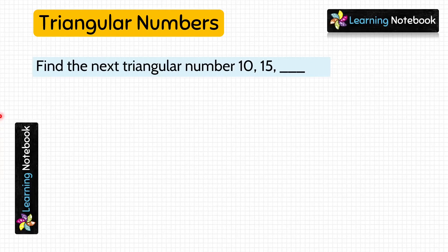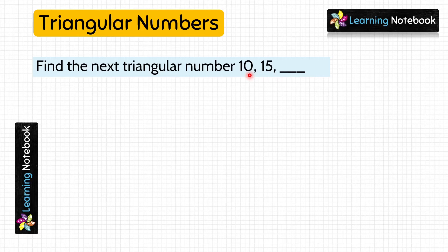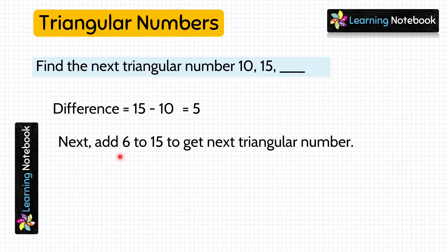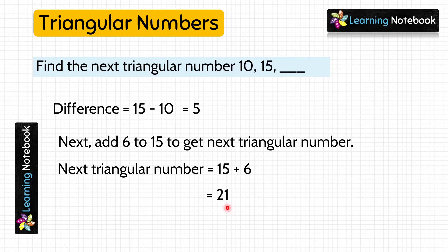Now let's do a different question. Find the next triangular number after 10 and 15. We are given two triangular numbers, 10 and 15, and we have to find the next one. First, find the difference: 15 − 10 = 5. Next, add 1 to this difference: 5 + 1 = 6. Then add this 6 to 15 to get the next triangular number: 15 + 6 = 21. So the next triangular number is 21.